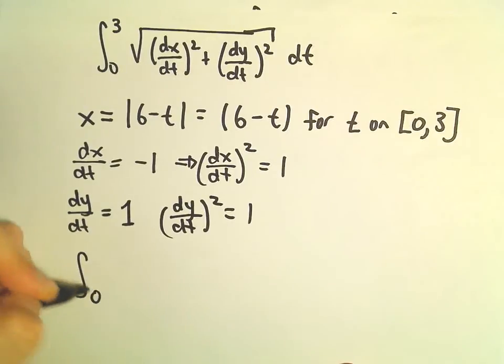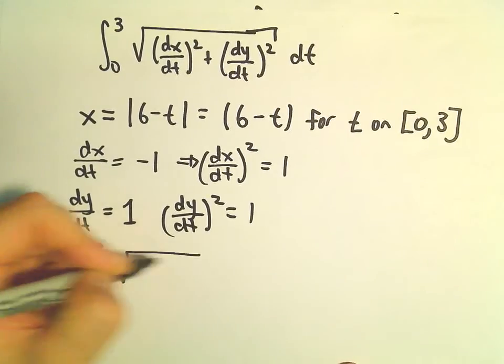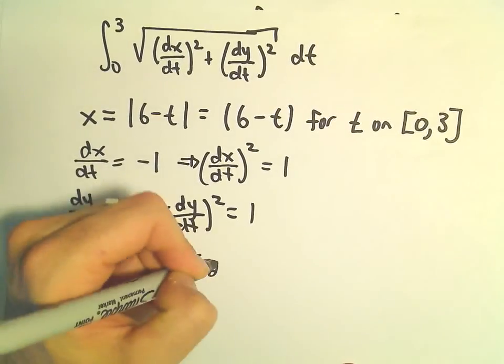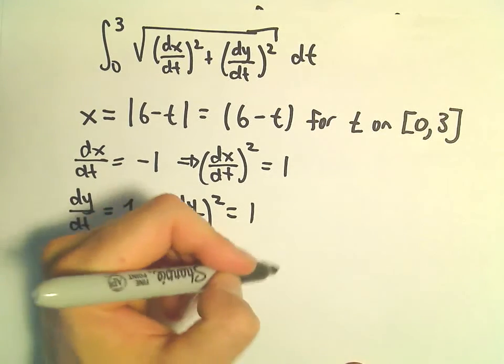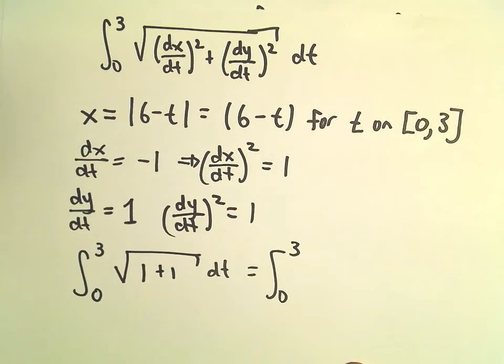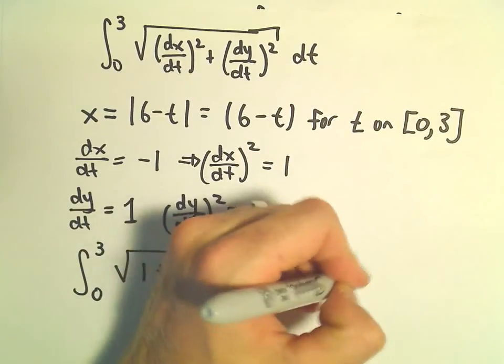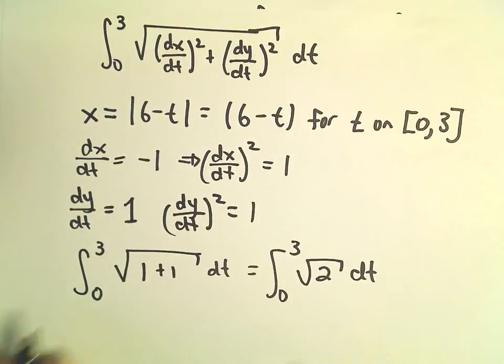Easy enough. So we've got the integral from 0 to 3. Then we just have 1 plus 1 dt. Well that's the integral from 0 to 3 of the square root of 2 dt.